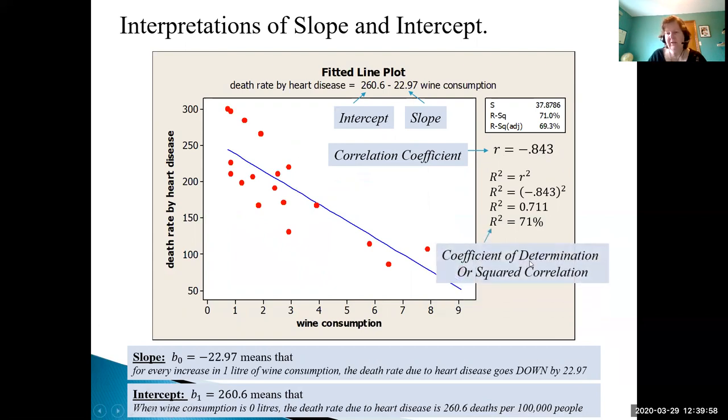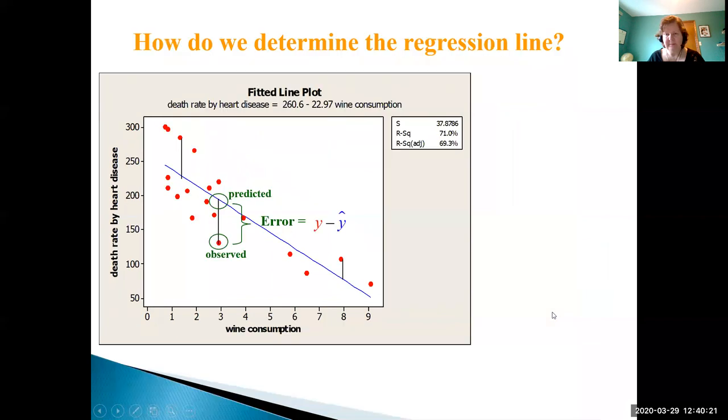We then have another value that we're going to measure, called the coefficient of determination or the squared correlation. The symbol is capital R squared, it's just our little r all squared. We square that value and then we change it to a percent. We're going to get into the meaning of what this tells us later on in the slides.